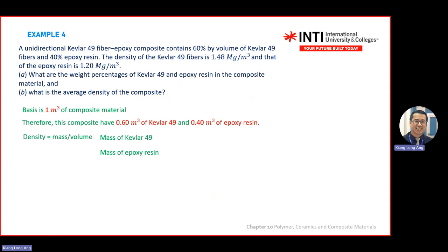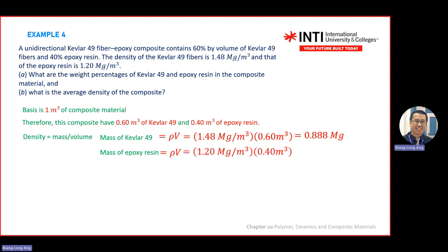You put in the values: density multiplied by volume gives mass. Do the same for resin. The units are in megagram because the question gives density in Mg/m³. Total mass is 1.368 megagram. Weight percentage of Kevlar equals mass of Kevlar divided by total mass, multiplied by 100. You get approximately 64 wt%. For resin, you can take 100% minus the Kevlar percentage, or calculate 0.48 divided by 1.368 — same answer.